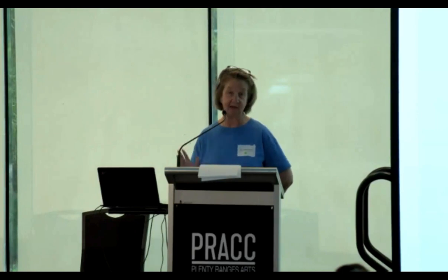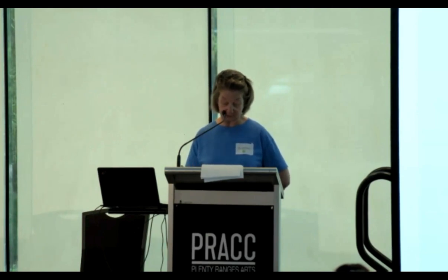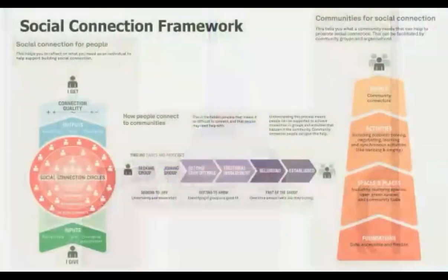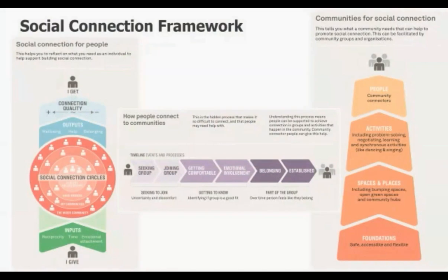Finally, you can put all this in place but some people still find it hard to connect, so we have the idea of community connectors — naturally occurring or employed people who are able to connect people together. We also include a socialization model, because when you put two people together they don't always connect. It's a process that starts with anxiety and confusion — 'Do I fit in? Is it going to be okay?' — then a process of finding out whether you feel comfortable, and eventually you might feel that you belong and have ownership of that group, or over time you might decide that group isn't for you.